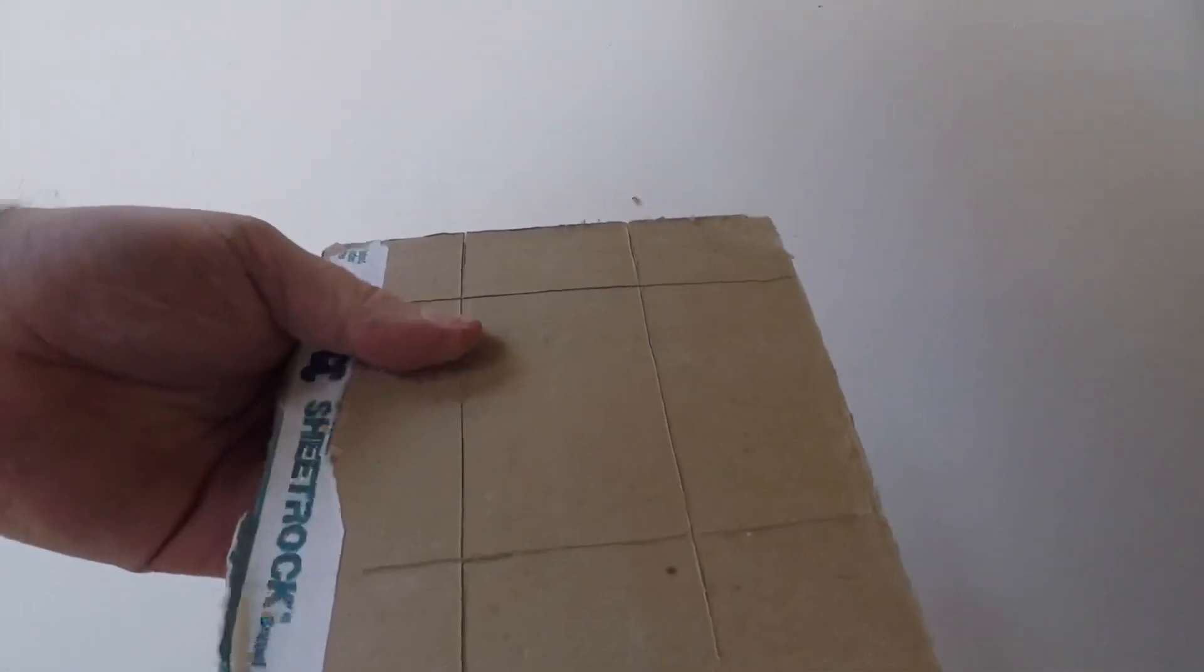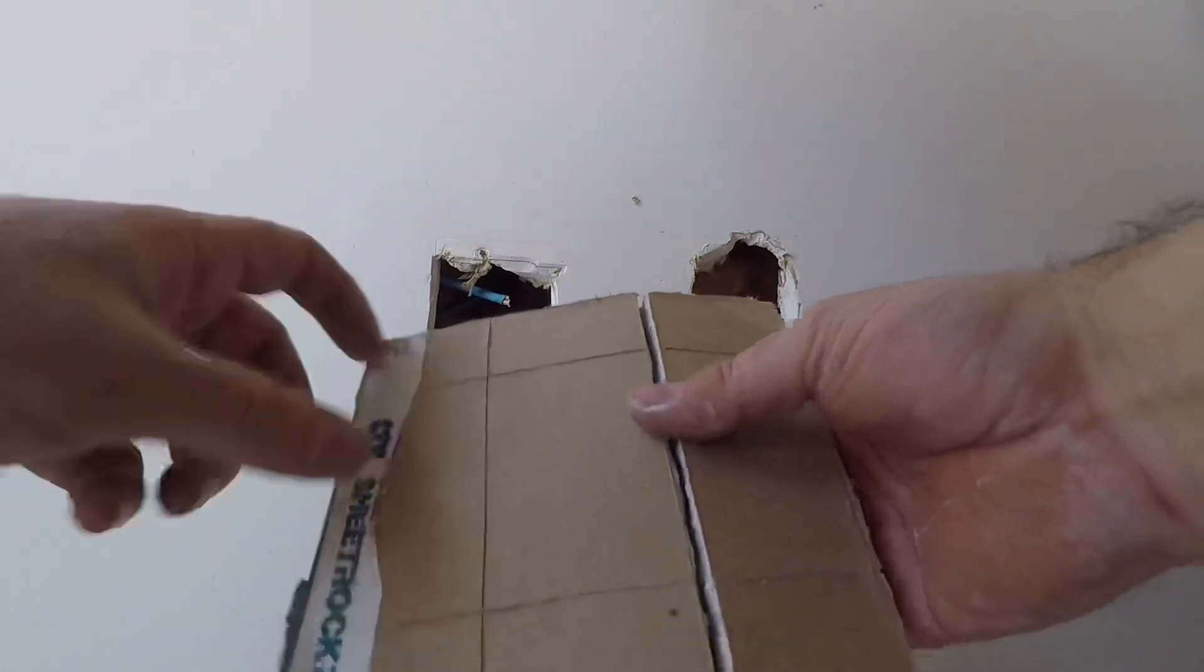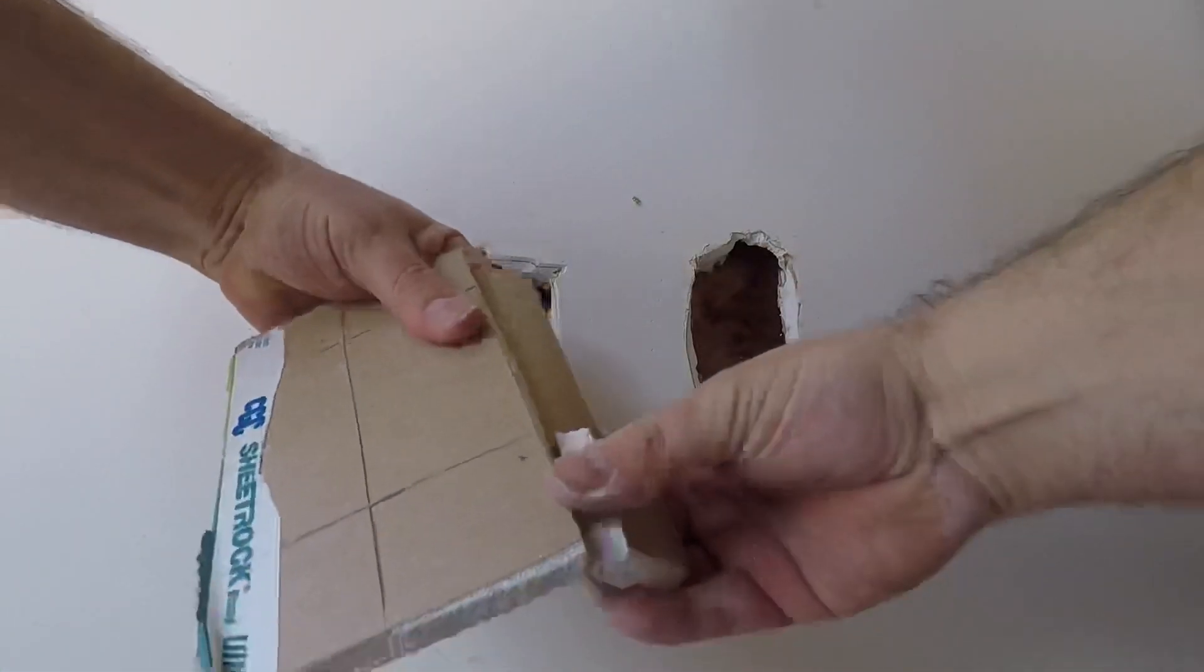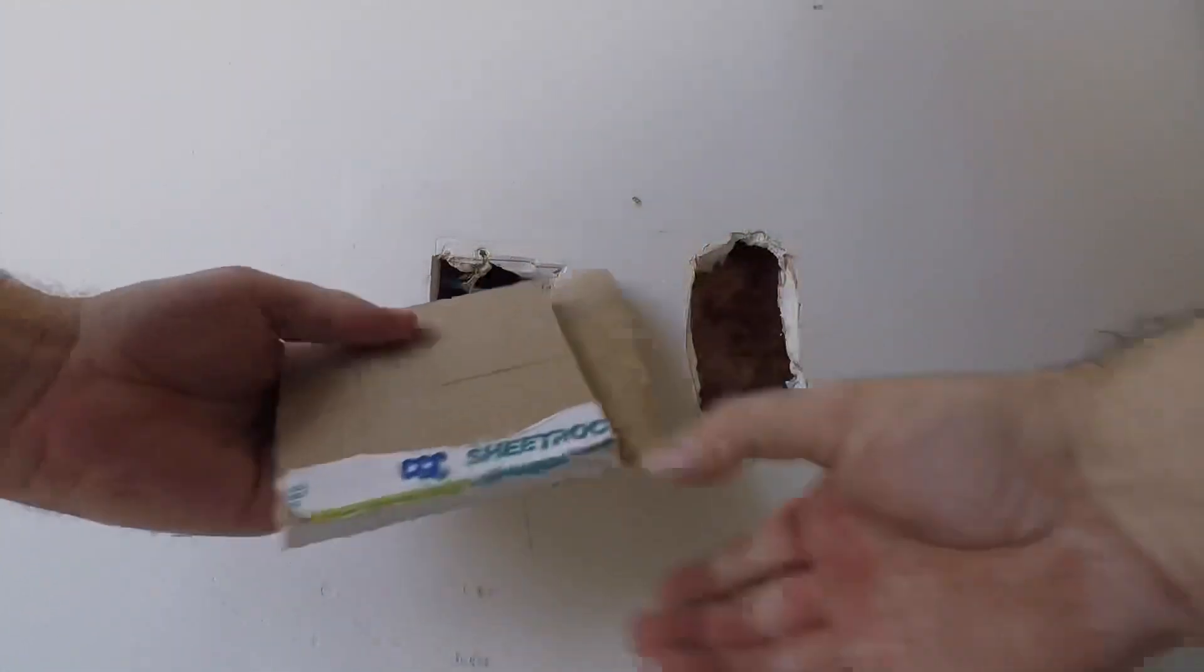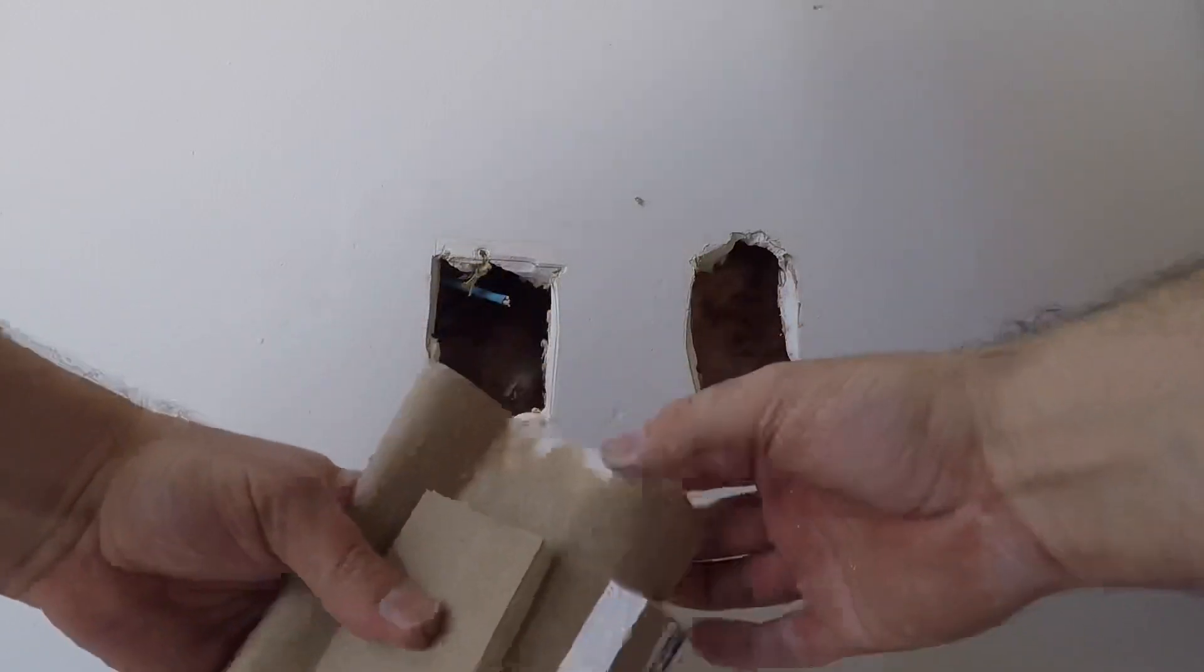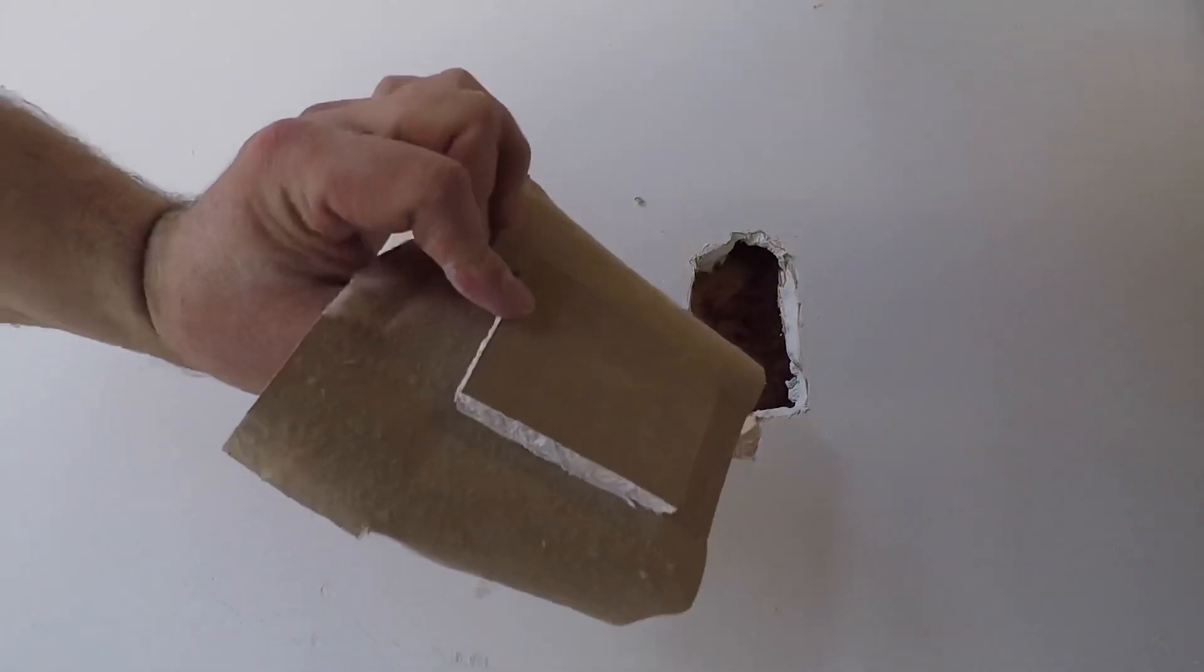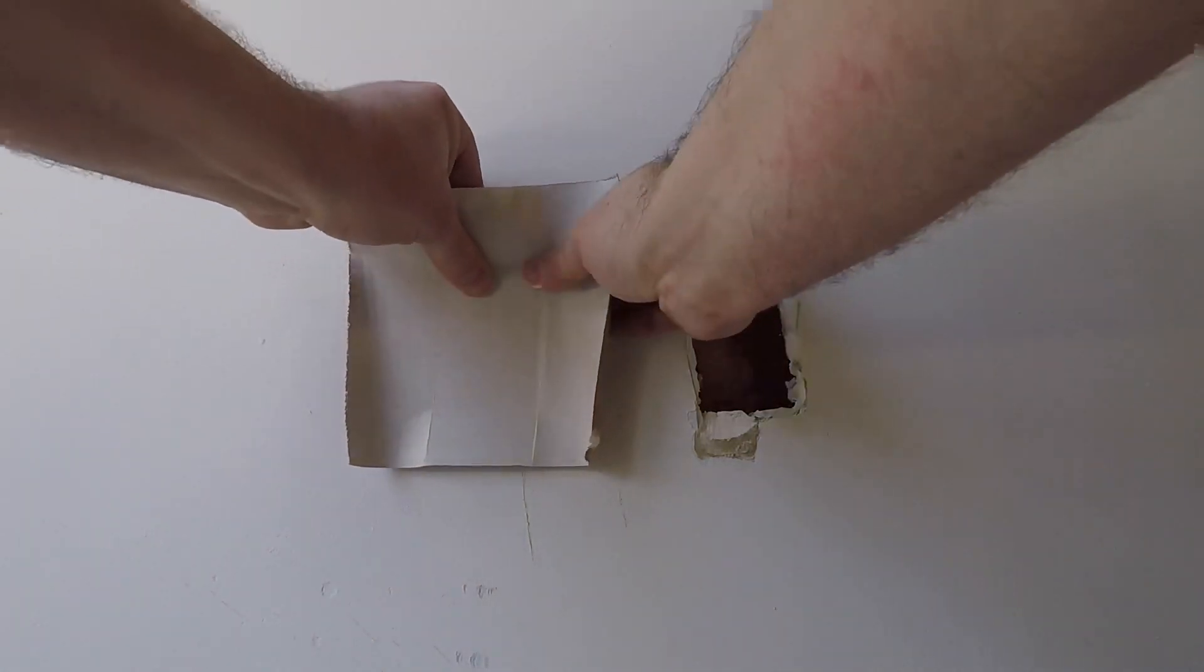So now you basically have a grid. Make sure you cut on the brown side. We're going to break it, peel it all away. Try to go nice and slow, you don't want to damage too much of the paper, but it's not a big deal if you do. There you have it, California patch. Make sure it fits.